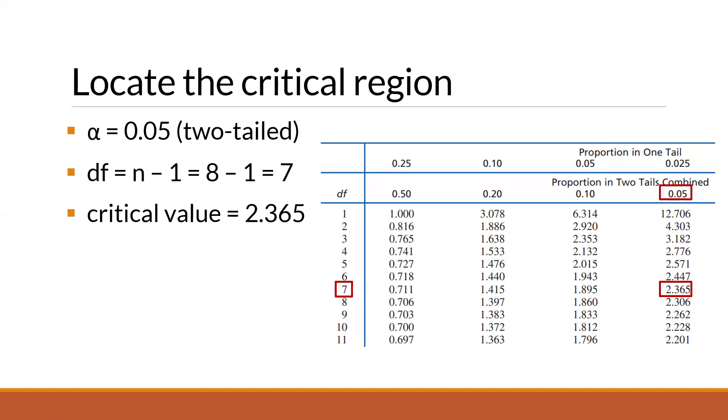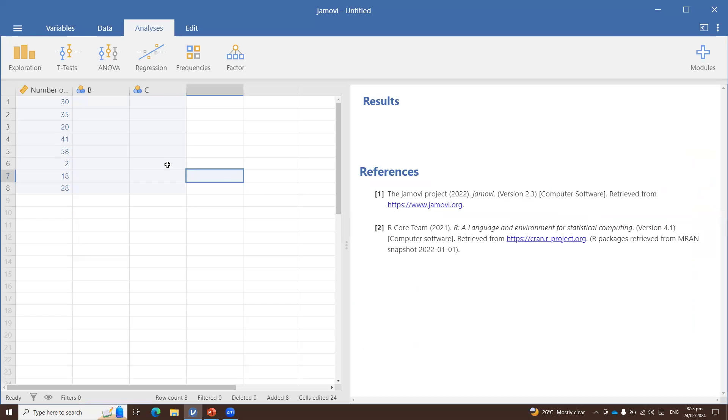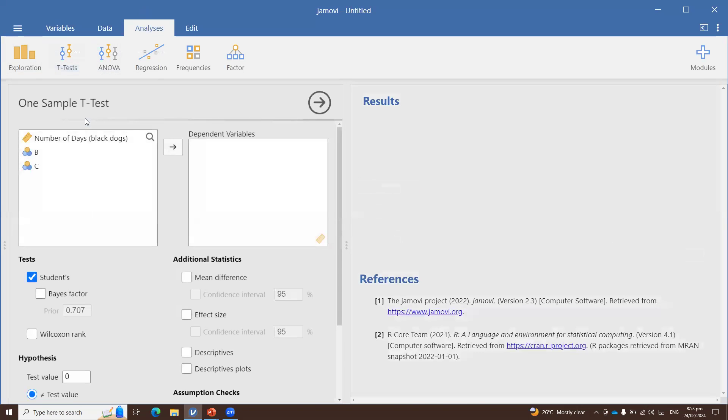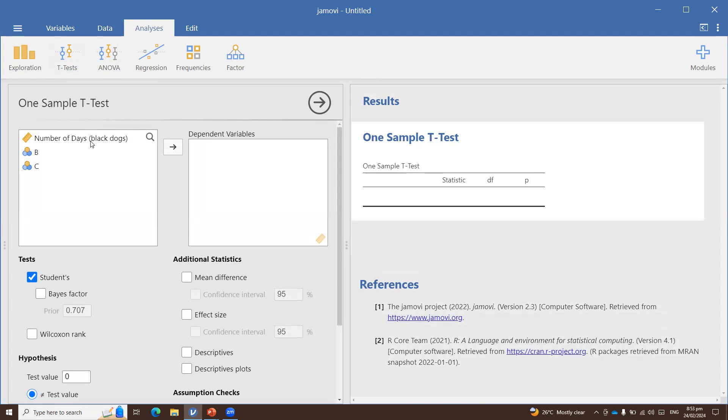Okay, so now let me show you the computation in Jamovi. So here we have the value or the number of days it takes for the eight black dogs in the organization to get adopted. And to run a one-sample t-test, we have to click on t-test, we have to click on one-sample t-test, and then we will drag number of days to the right under dependent variable.